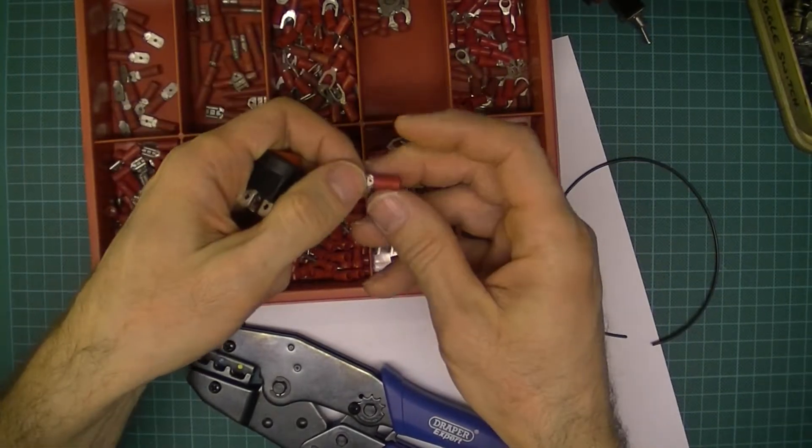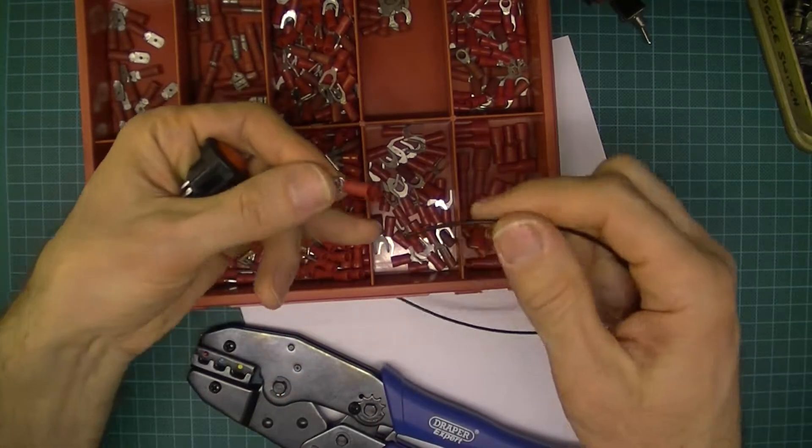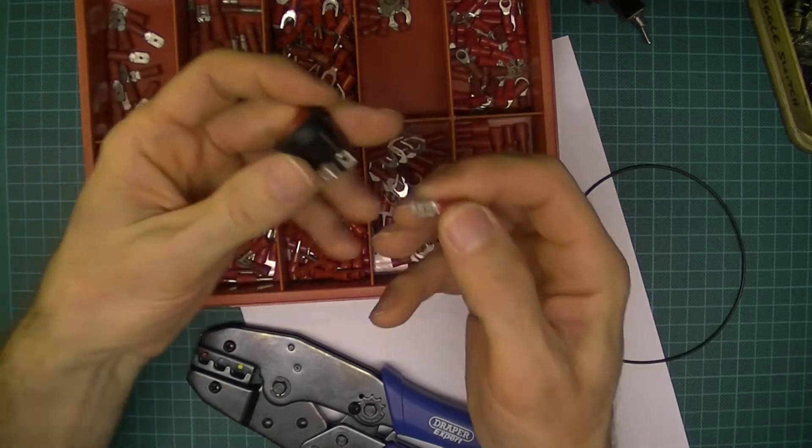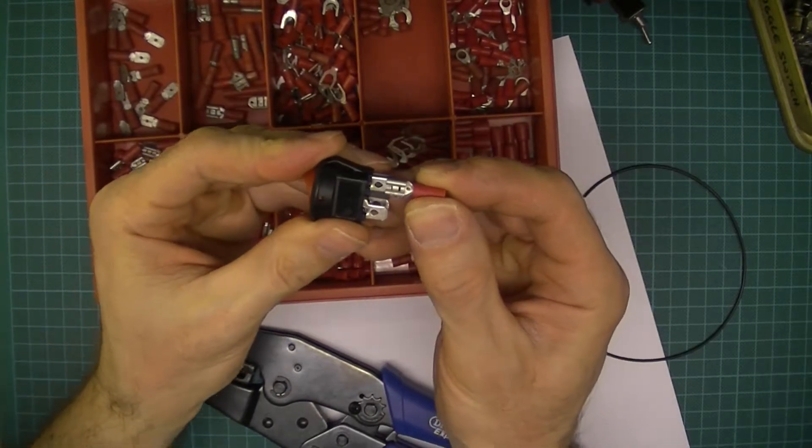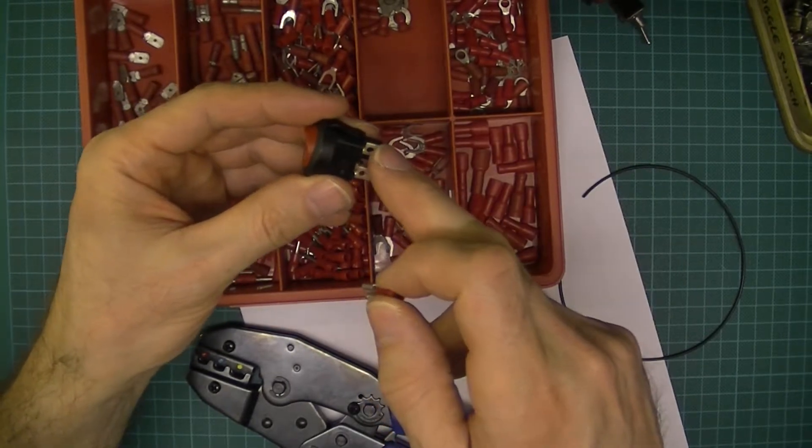Now these crimp terminals, the wire is going to go in here and then this crimp terminal is going to get pushed onto there and they're a really firm fit. That means you don't have to do any soldering.